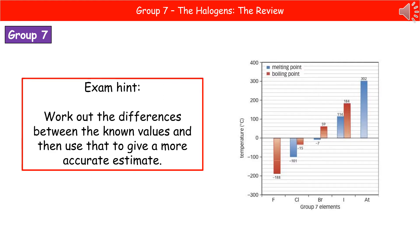A favourite exam question gives you key properties with some missing from a table or graph. For example, you might be given melting points and boiling points for the group 7 elements as bar charts, but fluorine's melting point and astatine's boiling point are missing. Don't just put a number that's above or below — work out the differences between each value and apply that difference to find the missing one. You need to be quite accurate, otherwise you'll lose the mark.